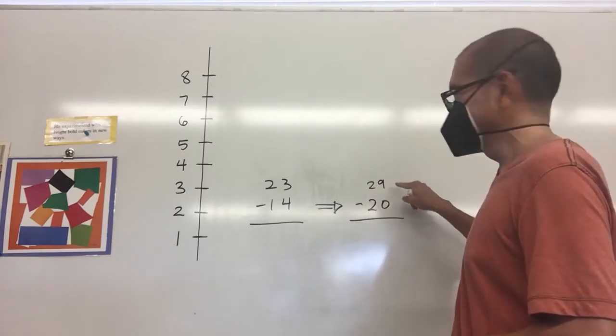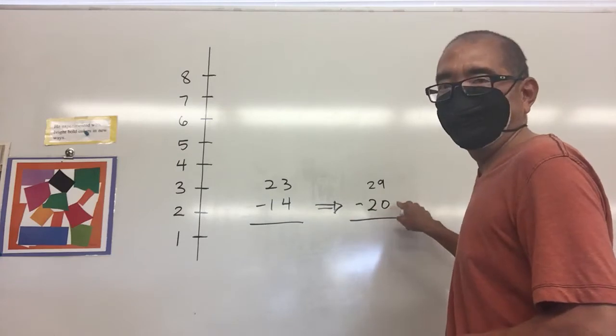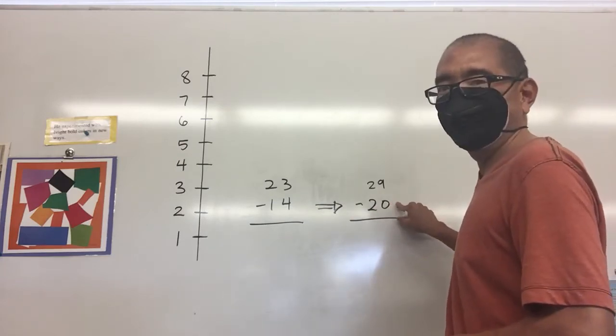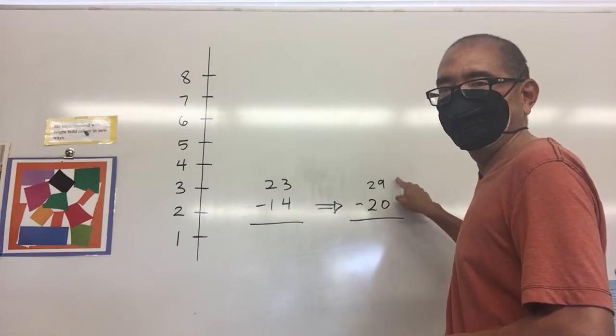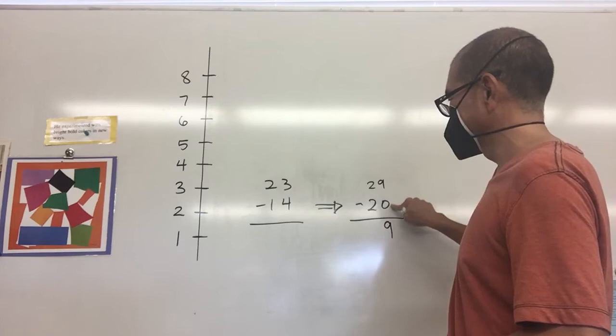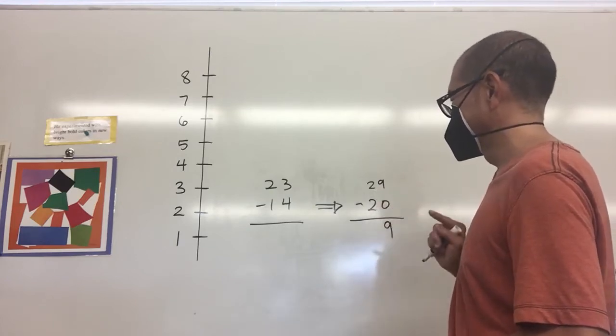So then now I subtract 29 minus 20 and that's a whole lot easier because subtracting zero from a number is that number. Nine minus zero is nine, two minus two is zero.